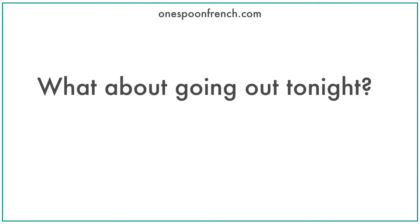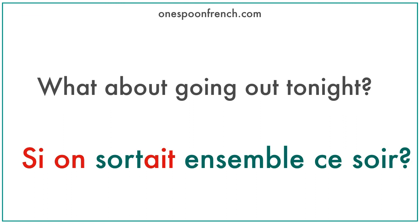The next sentence is: 'What about going out tonight?' — 'Si on sortait ensemble ce soir.' The word 'ensemble' means 'together.' And 'sortait' is the third person imperfect verb form of the verb 'sortir,' which means 'go out.'